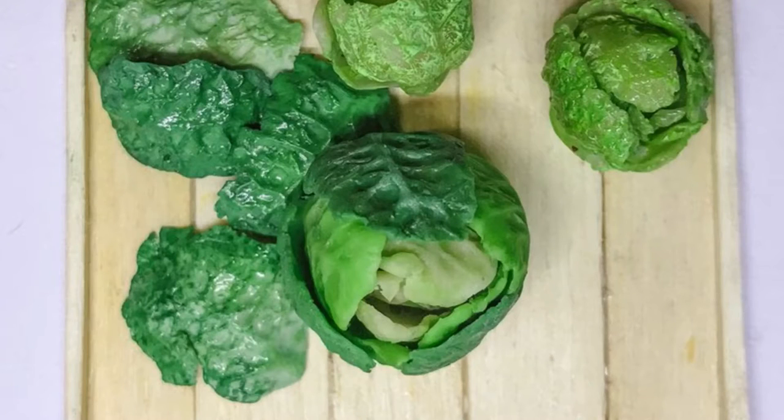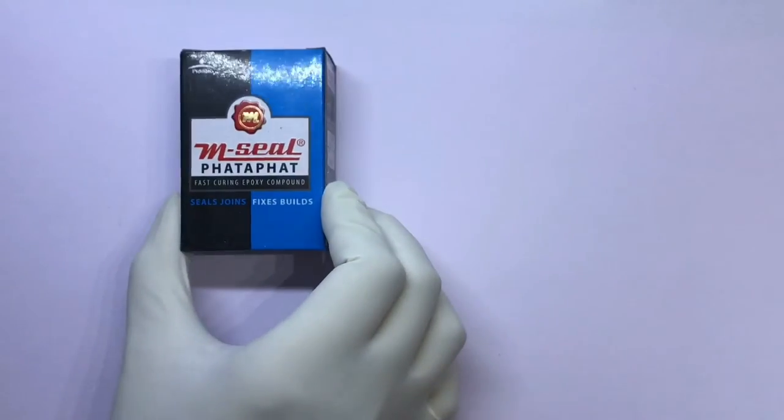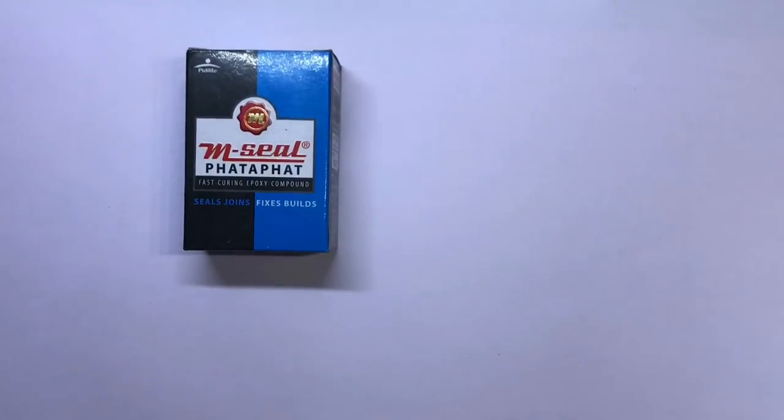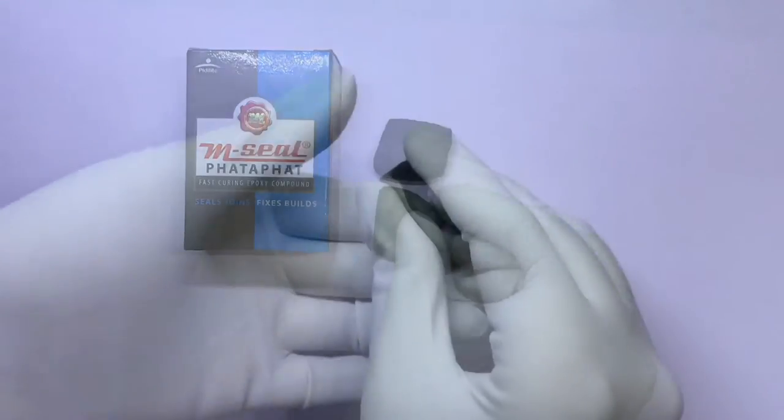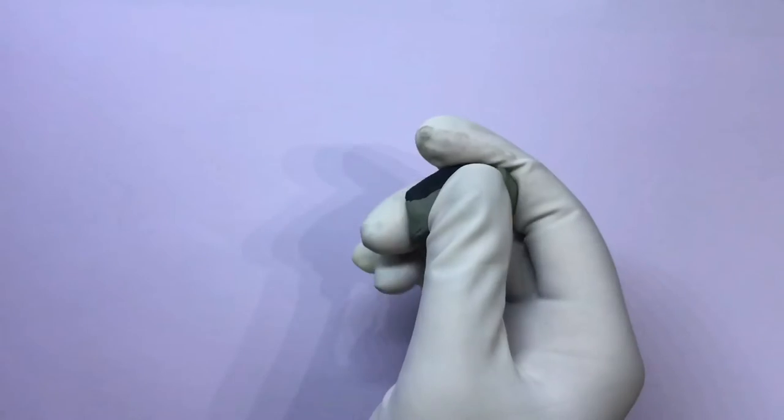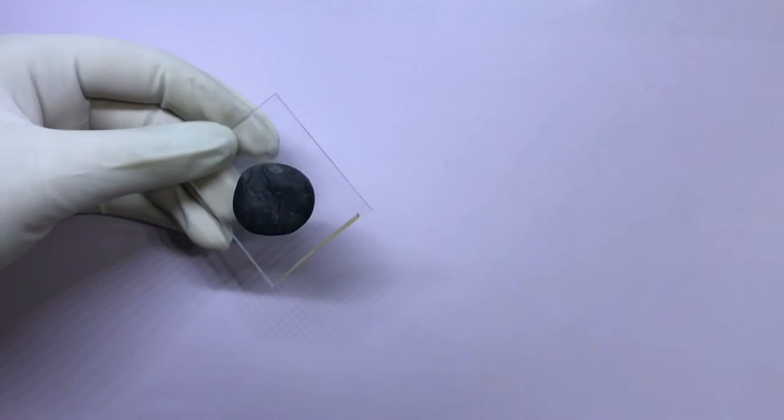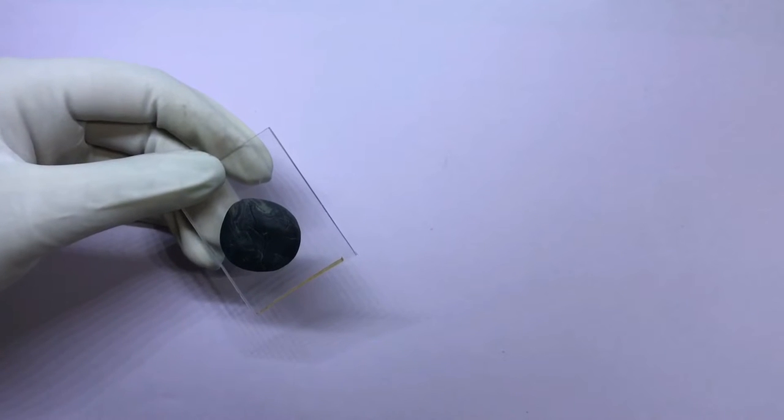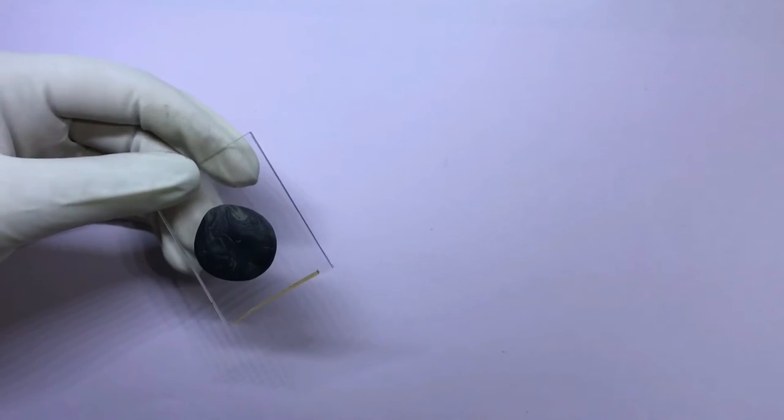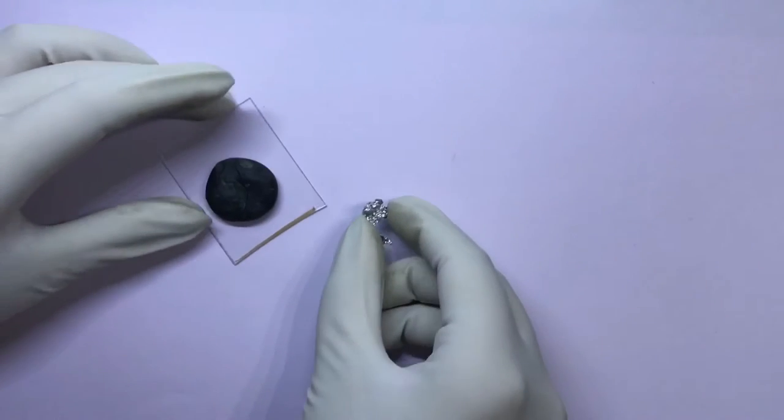Hi guys, today we're going to make cabbage using polymer clay. Let's get started. First we need m-seal or any regular putty. Take the two parts and mix them thoroughly. Make it into a round ball and flatten it.